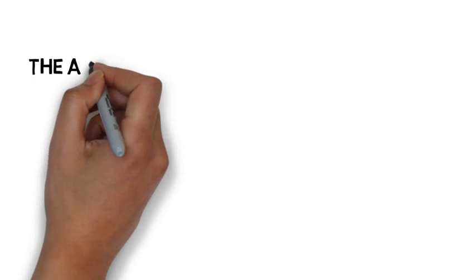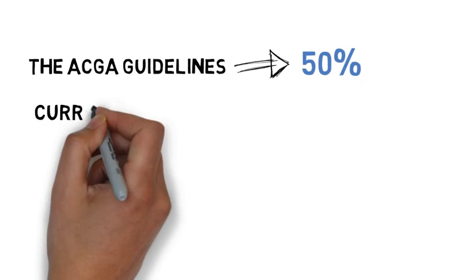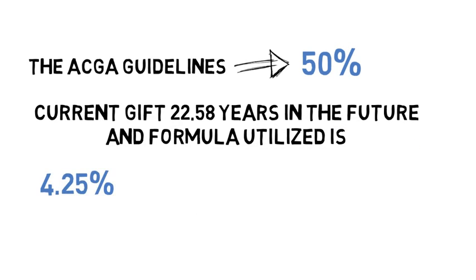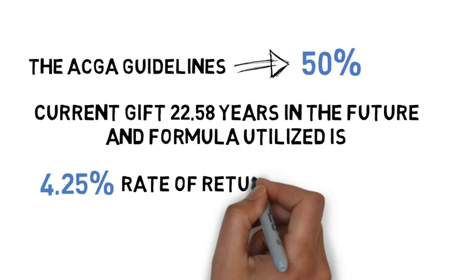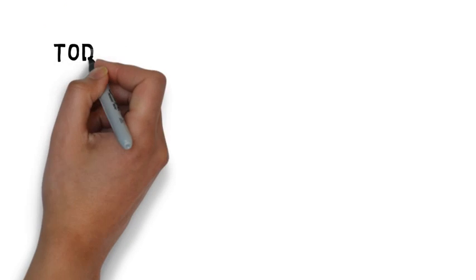The ACGA guideline targets 50% of the current gift 22.5 years into the future. The formula utilized is a 4.25% rate of return to accomplish the targeted $50,000 in the future. The current value of that $50,000 is $19,540 today.